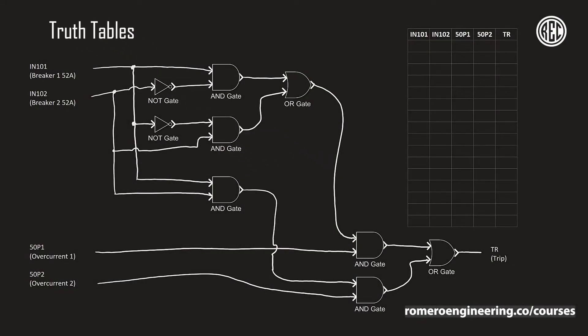Logic truth tables are a way in which we can determine the output of a piece of logic for all the possible different combinations of the inputs. This becomes extremely useful when designing complex logic schemes, since we can clearly see what the output is going to be for all the different combinations of the inputs.